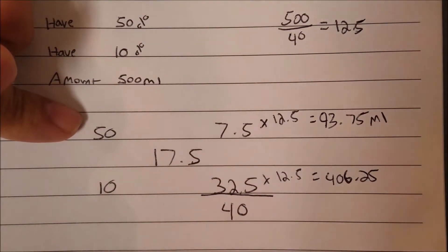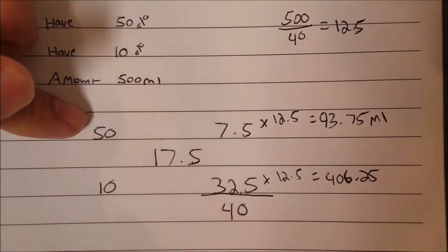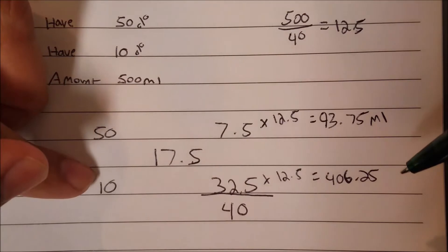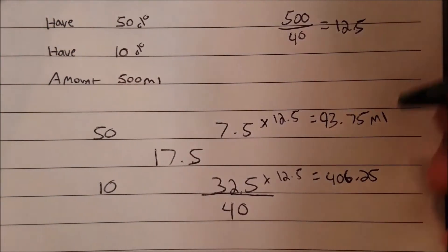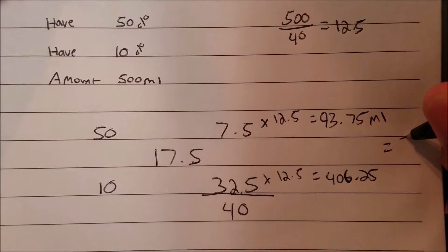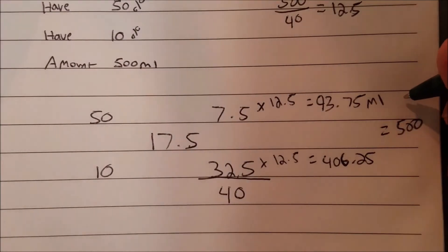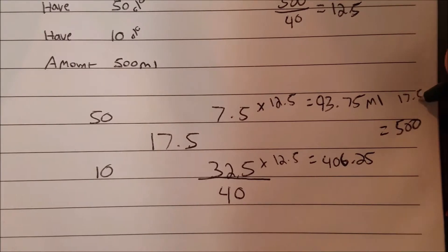And then the 406.25 means you're going to need dextrose 10%, 406.25 mls, to equal the total volume of 500 mls of the 17.5%.